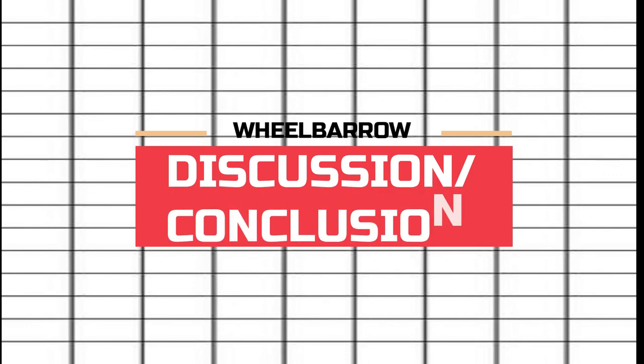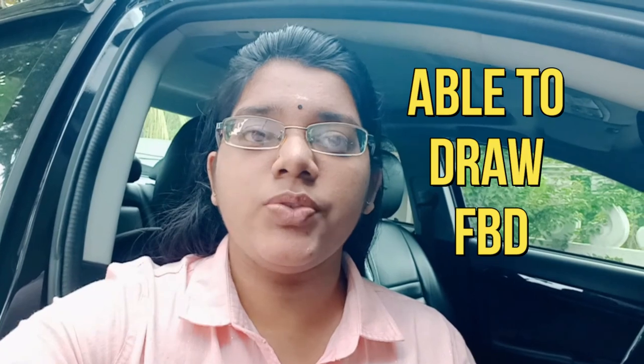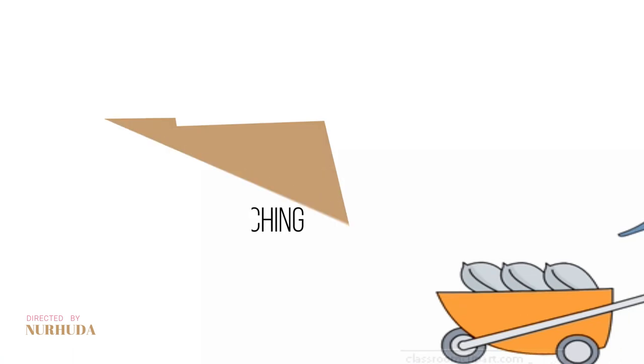Let's look at the final answer for the problem. For the discussion and conclusion: at the end of the project, we are capable of drawing the free body diagram from the actual structure and relating it to the problem. We can develop equilibrium equations and identify each system from the FBD drawing. The purpose of developing the equilibrium equation is to find out the forces acting on our system. That's all from our group, thank you so much.